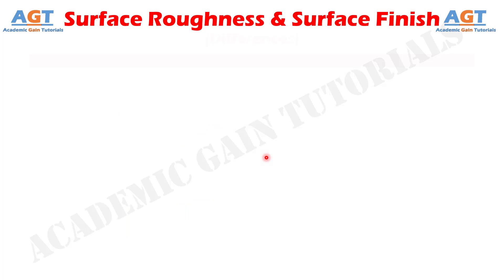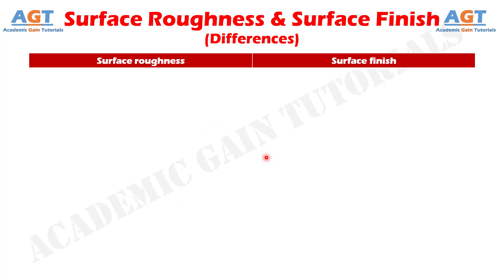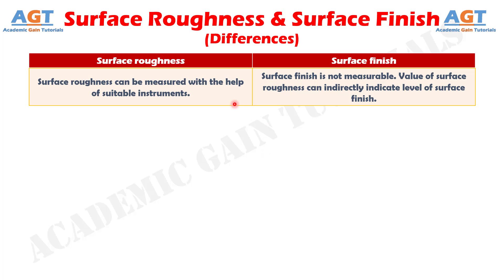So let's look into the basic differences between surface roughness and surface finish in a tabular form. Difference number one: surface roughness can be measured with the help of suitable instruments, whereas surface finish is not measurable. The value of surface roughness can indirectly indicate the level of surface finish.